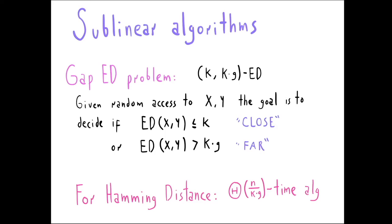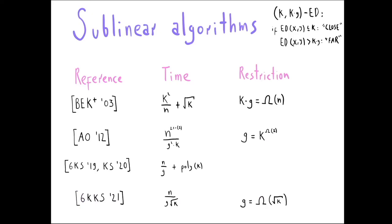Unfortunately, the case for edit distance is much less understood and the known upper bounds are quite far from the known lower bounds. In the pioneering work by Batu and others in 2003, they showed how to solve the gap edit distance problem in sublinear time — namely k²/n + √k — but this only works when k·g is at least Ω(n). There are other results which improve this in some regimes, but some of these algorithms are hard to compare against each other.